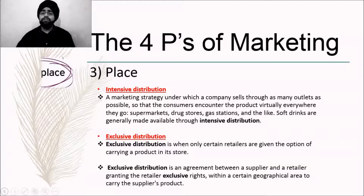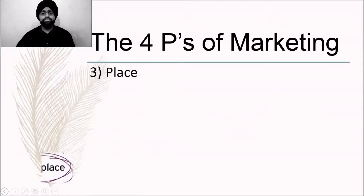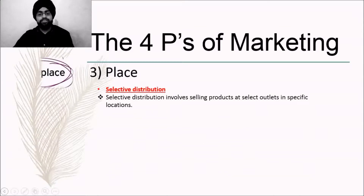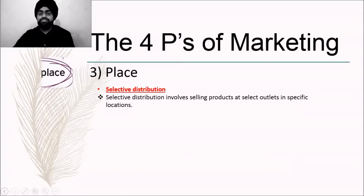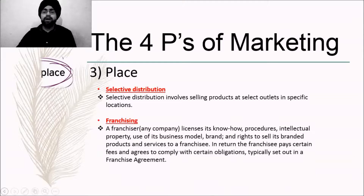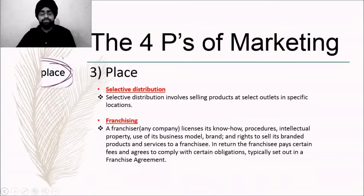Moving on to selective distribution — in this strategy, the company sells its product through select outlets in certain specific locations. And then there is franchising — a market distribution strategy in which a franchiser, i.e. a company, licenses its know-how, its brand, its procedures, and sometimes its intellectual property to the franchisee. In return, the franchisee pays certain fees and agrees to comply with certain obligations set out under the franchise agreement.